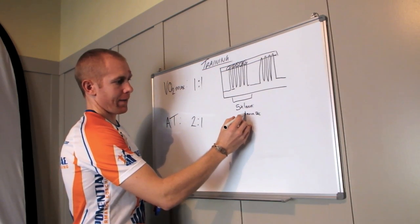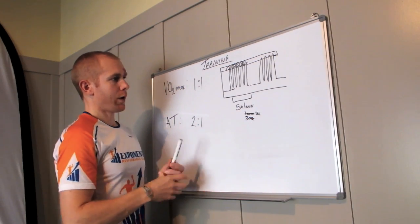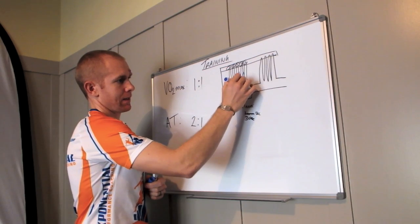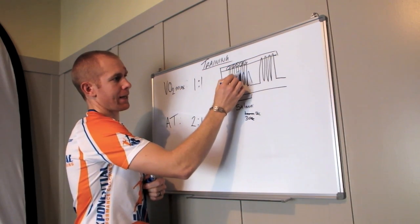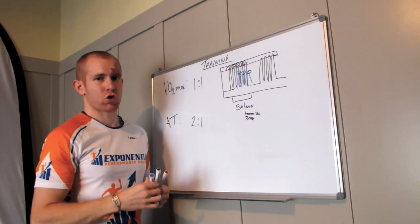And we want to let that body recover between the intervals. If we were to cut that in half, say 30 seconds, what would happen is we'd start to fatigue, and our intervals would no longer be up in the effective training zone.